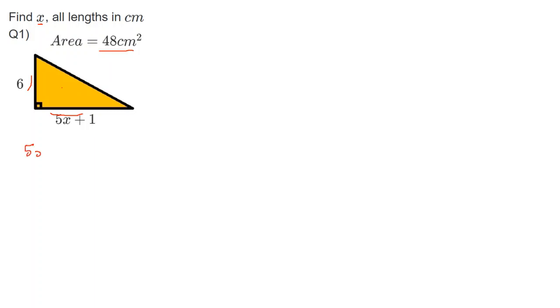So the base is 5x plus 1. I times that by 6, because that's the height, so I do the base times the height. Then I divide that by 2, and that gives me 48, because that is the area. Now, timesing by 6 and then dividing by 2, or 6 divided by 2 is 3. So this is the same as 5x plus 1 times 3 equals 48. Then the inverse of timesing by 3 is dividing by 3, leaving me with 5x plus 1 equals 16. 5x equals 15, and finally, x equals 3.